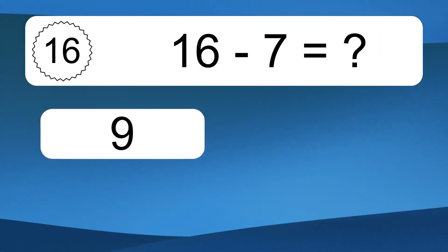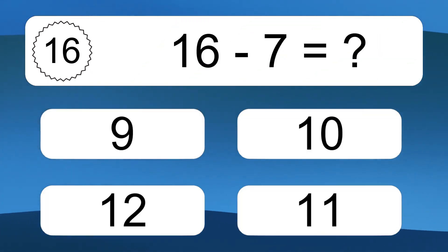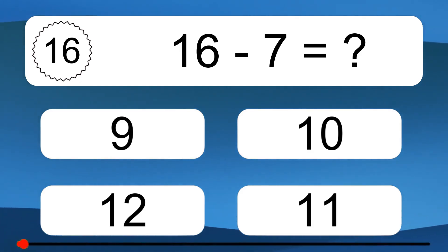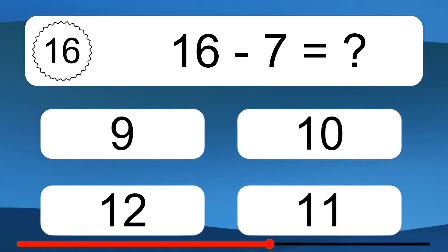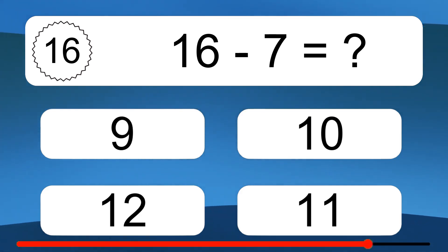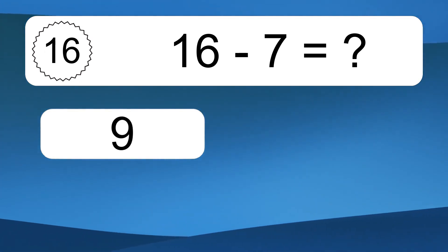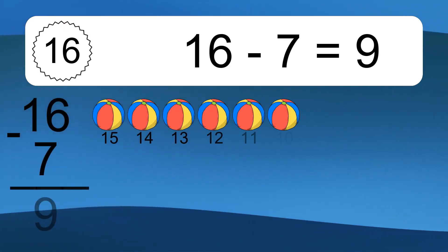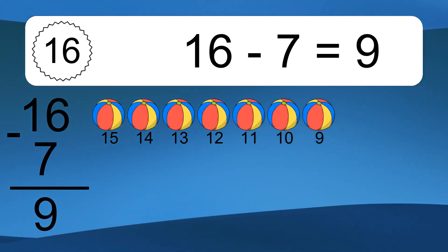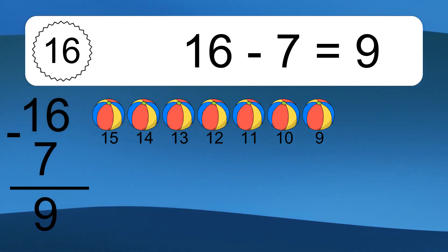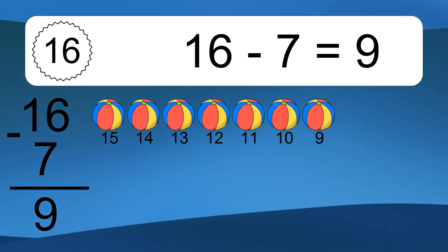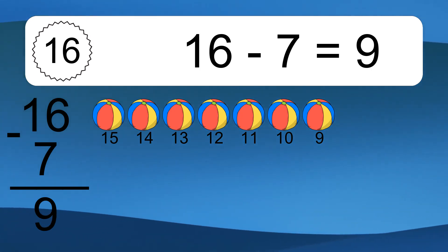16 minus 7 equals what? 16 minus 7 equals 9. Let's count it: 15, 14, 13, 12, 11, 10, 9.